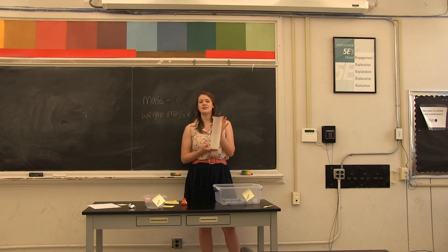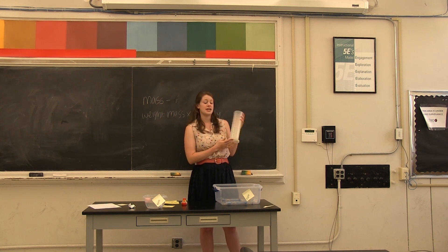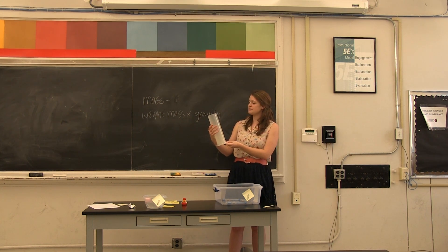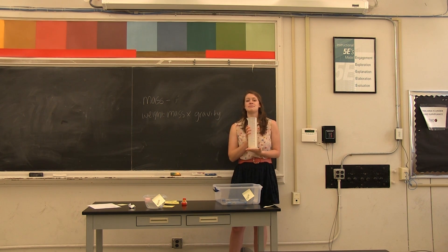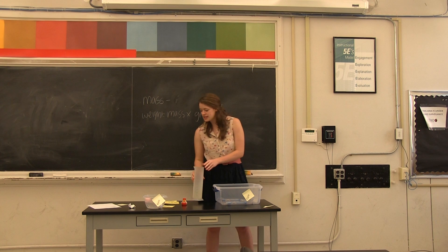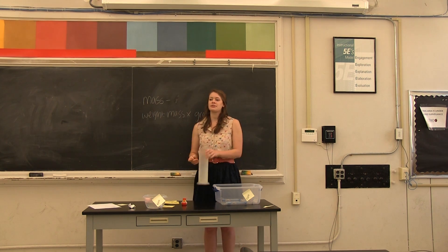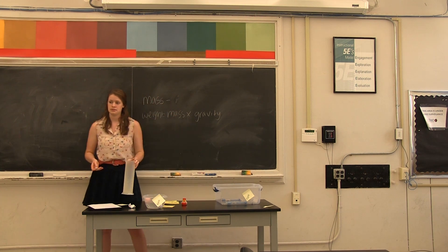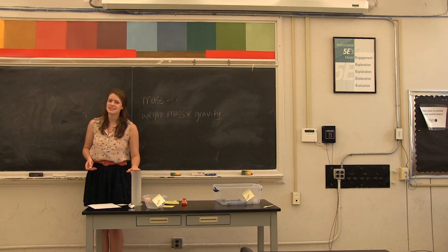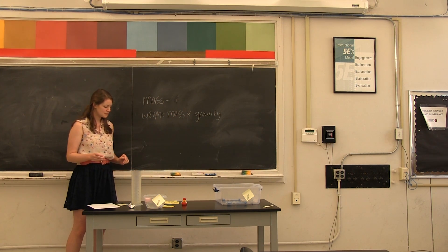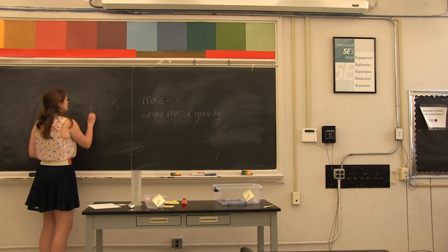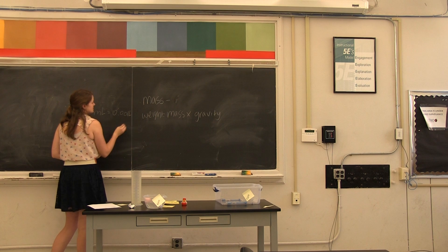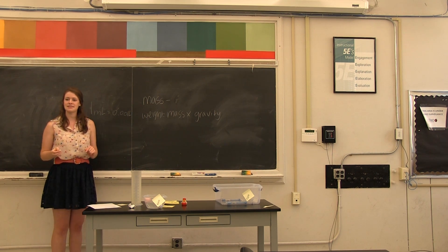So, this is a graduated cylinder. It's a very large graduated cylinder, but it's used to measure volume. On here, it's in milliliters. What is the relationship between milliliters and liters? Milliliters are smaller. One milliliter is equal to 0.001 liters. Does that make sense to everybody?